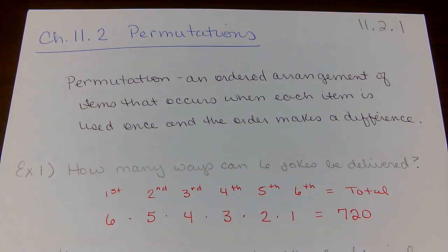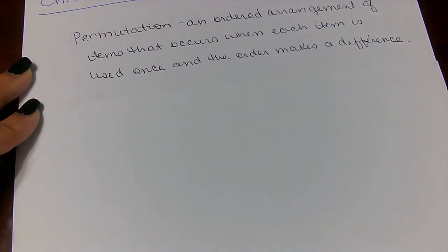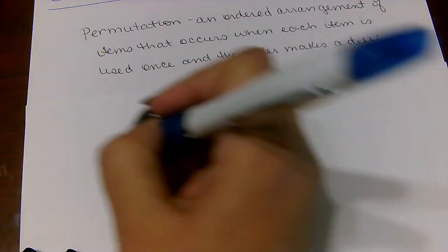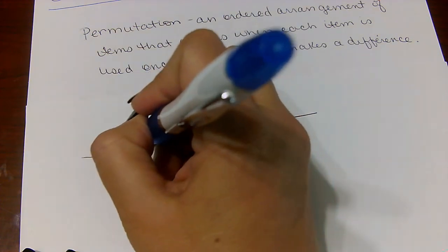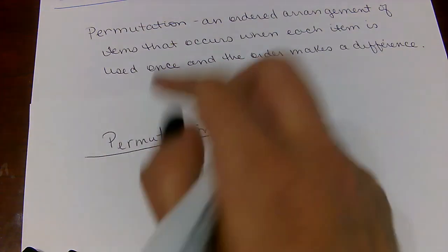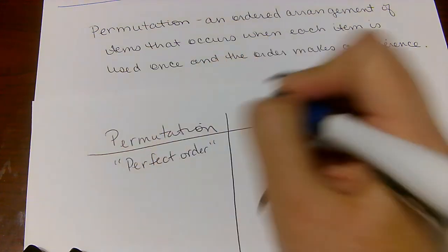In this video, we'll be focusing on Chapter 11, Section 2 on permutations. A permutation is an ordered arrangement of items that occur when each item is used only once and the order makes a difference. The order makes a difference, so we have to have a perfect order.